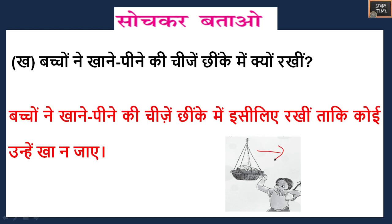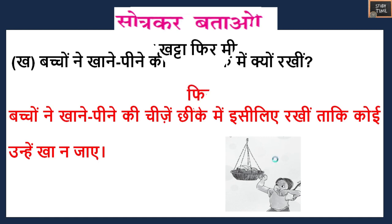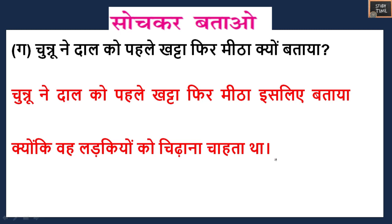Third question: why did Chunnu describe the dal as sour first and then sweet? Chunnu described the dal as sour first and then sweet because he wanted to tease the girls — that's why he kept saying 'katta meeta, katta meeta'. He was saying this to tease the girls.